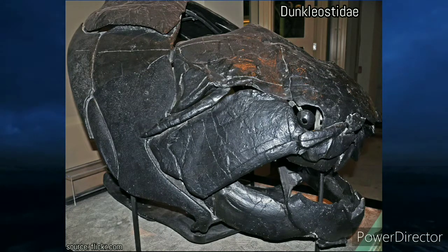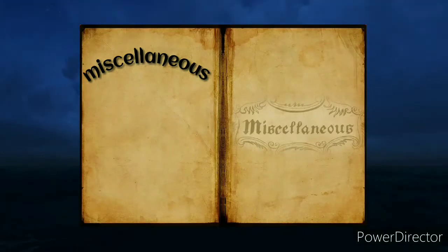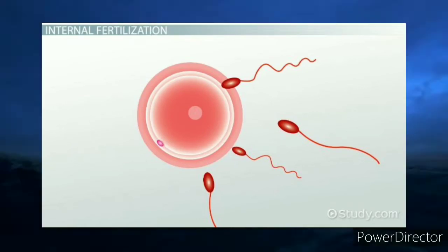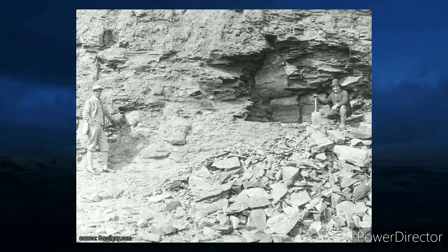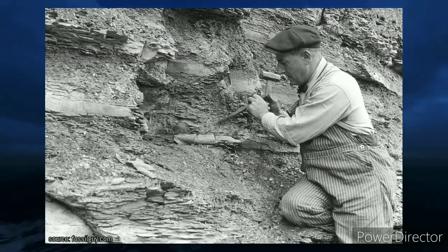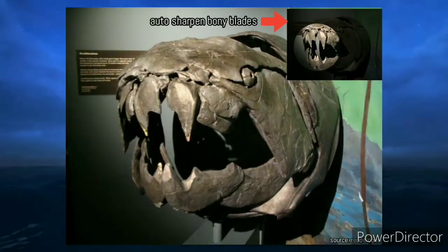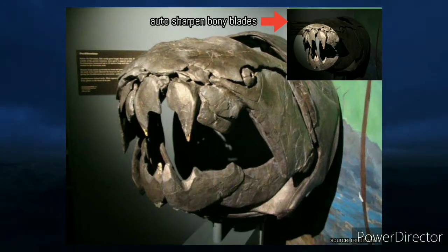Dunkleosteus is among the first vertebrates to have internal fertilization. It probably regurgitated the bony parts of its victims frequently, as several semi-digested remains were found near the fossils of this creature.